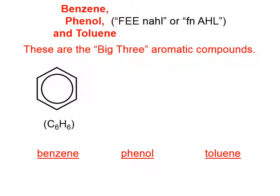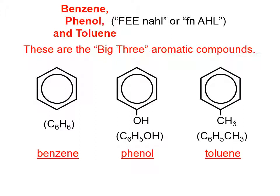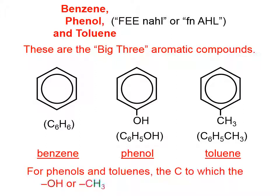Benzene is C6H6. Phenol is essentially a benzene ring, but instead of an H at one location, that H has been ripped off and an OH has been inserted. Often, the phenol molecule is written as C6H5OH. With toluene, instead of an H, we have a methyl group there. Sometimes toluene is called methylbenzene. The formula is often written as C6H5CH3. For phenol and toluene, the carbon to which the OH or the CH3 is attached is carbon number one.